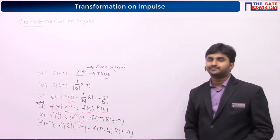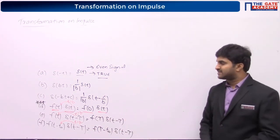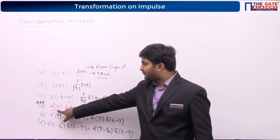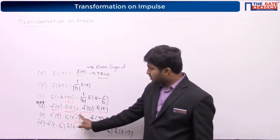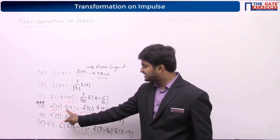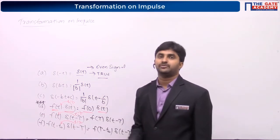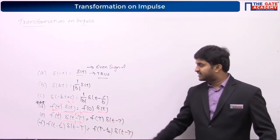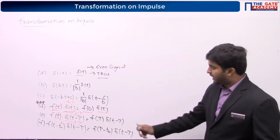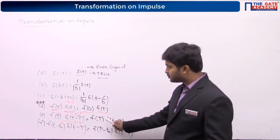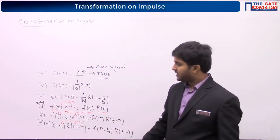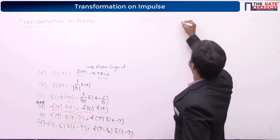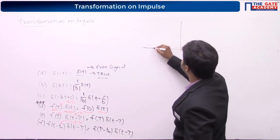Wherever you have an impulse, there you get the sample of the signal. Here del(t) has an impulse at t equal to 0, so substitute t equal to 0 to get f(0)·del(t). For del(t - tau), impulse is at t equal to tau, substitute to get f(tau)·del(t - tau). I will explain the last result in detail so you can generalize to remaining signals.